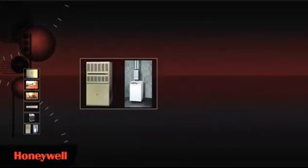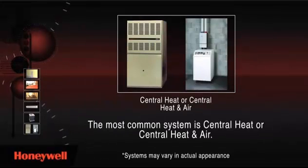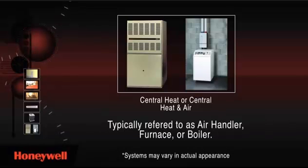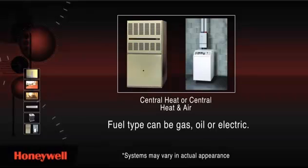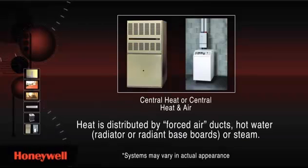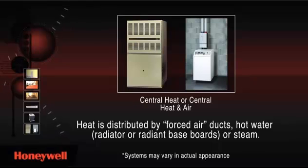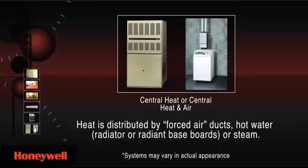The most common system is central heat or central heat and air, typically referred to as an air handler, furnace, or boiler. These can run on gas, oil, or electric. Heat is typically distributed by forced air ducts, hot water such as radiator or radiant baseboards, or steam.